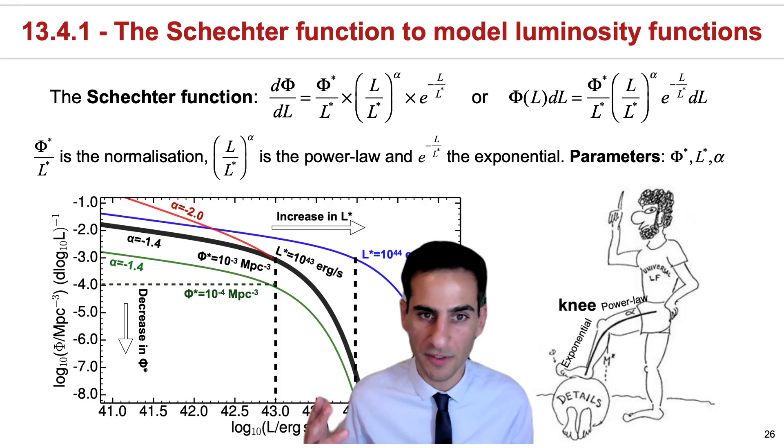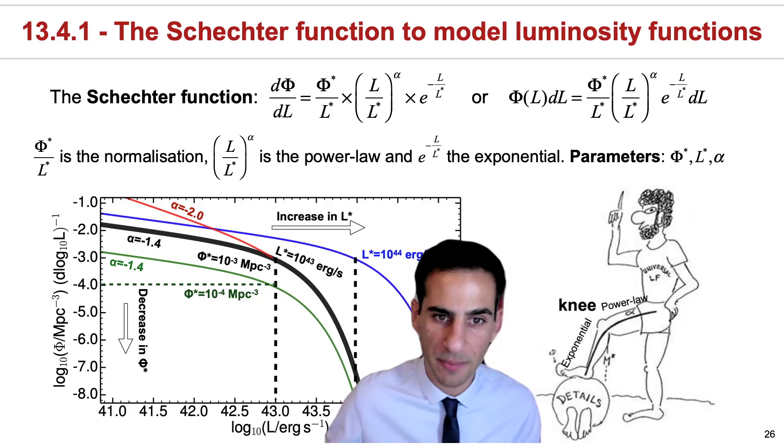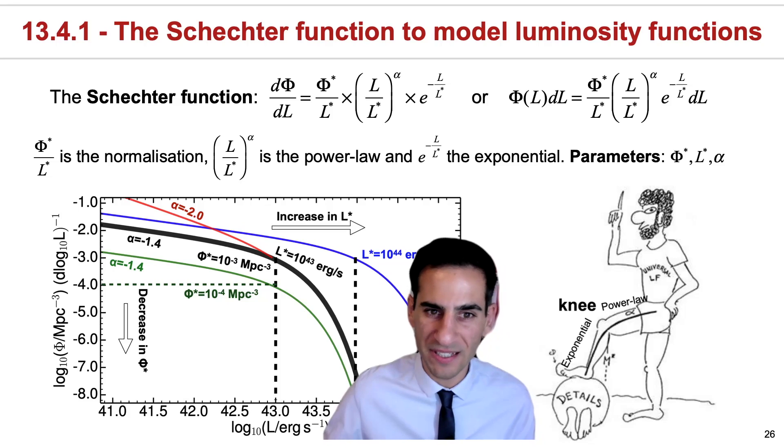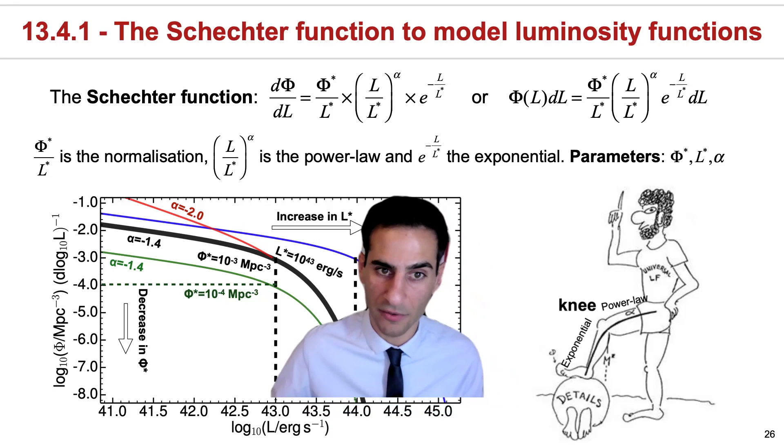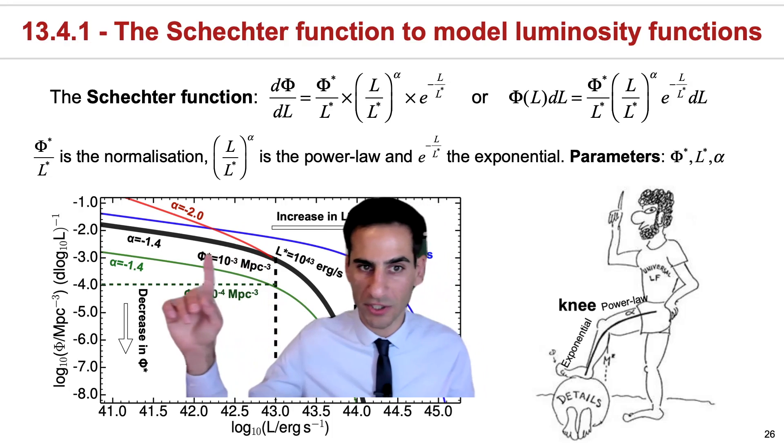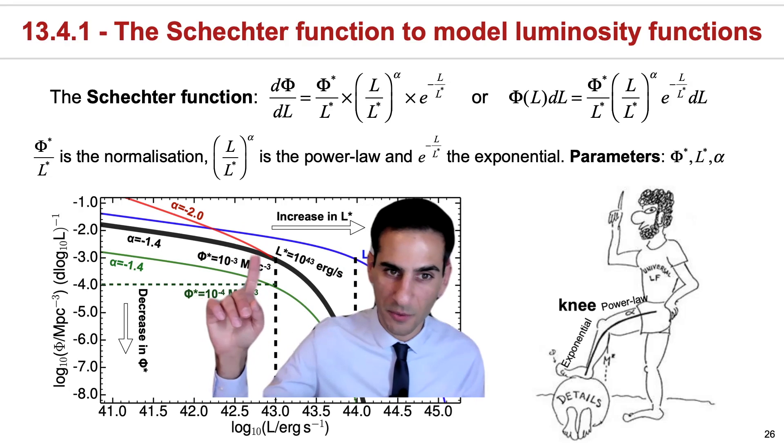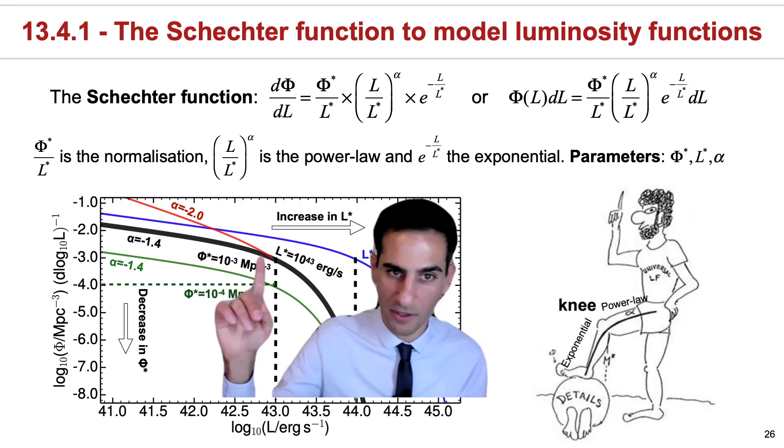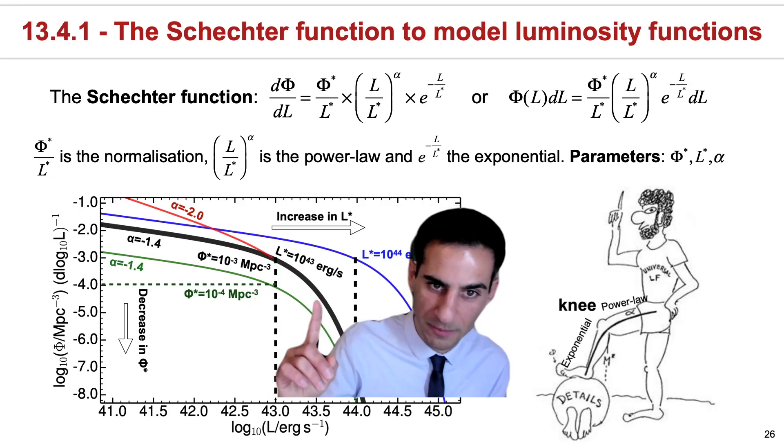One of the reasons why Schechter functions are also quite useful is because the parameters can actually be seen very easily in the graph. Essentially, L star is the luminosity at which, in practice, the function transitions between being a power law and being dominated by an exponential decay.